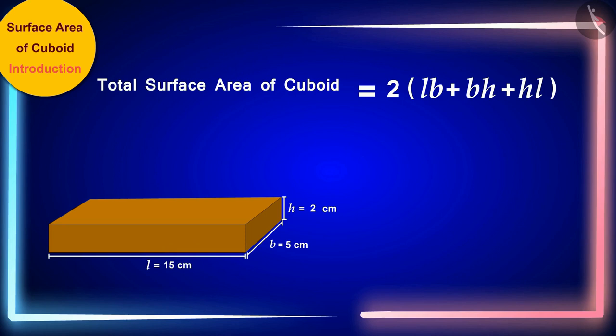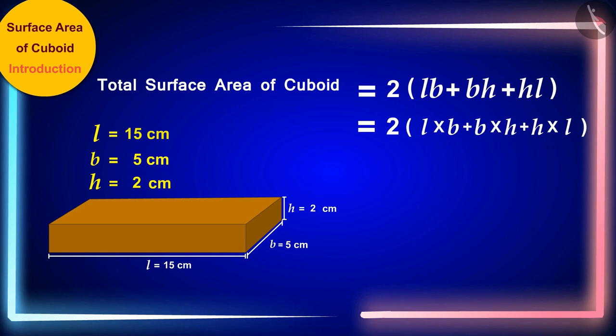The formula for total surface area of a cuboid where l, b, and h are the length, width, and height of the cuboid. Here we will write the length of the box 15 centimeters, the width 5 centimeters, and the height 2 centimeters respectively in place of l, b, and h. In this way we get the total surface area of the cuboid as 230 square centimeters.